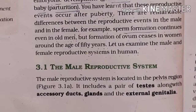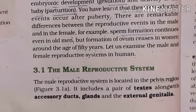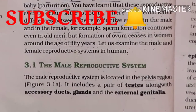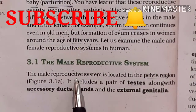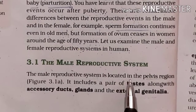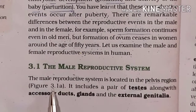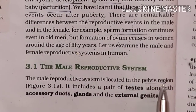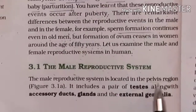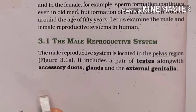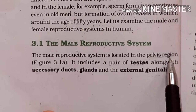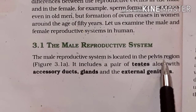Welcome to Bhavana Biology. Today's topic is the male reproductive system. The male reproductive system is located in the pelvis region — that is, the area between the abdomen and thigh, which is the hip region.